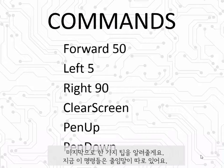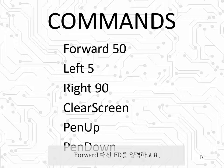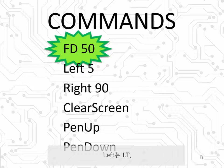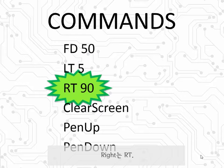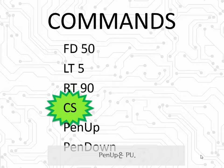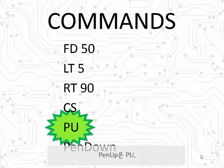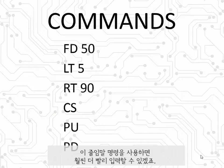Let me share with you one last tip. Each of these commands has a shortcut version. So instead of typing forward, you could type FD. Left is LT. Right is RT. Clear screen is CS. Pen up is PU. And pen down is PD. Using these shortcut versions, you can go way faster.